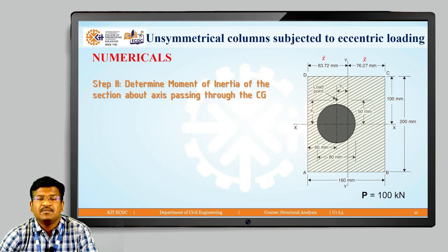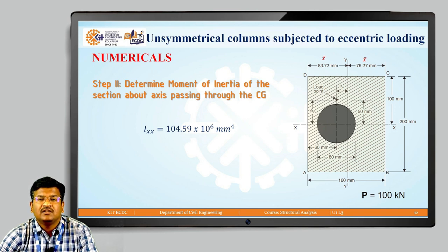Step two: determine the moment of inertia of the section about the axis passing through CG. Since the load is unsymmetrical about both axes, we require moment of inertia about both x-x and y-y axes. Ixx = 104.59 × 10⁶ mm⁴ and Iyy = 63.865 × 10⁶ mm⁴ for this unsymmetrical column.